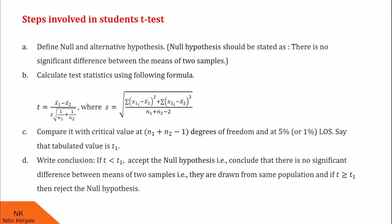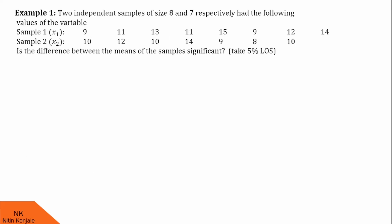I hope you understood these steps. Now let us proceed for the examples. Here is our first example: two independent samples of size 8 and 7 respectively had the following values of the variables. These are values of the first variable x1 and these are values of the second variable x2. The question is: is the difference between the means of samples significant? We are asked to take 5% level of significance.